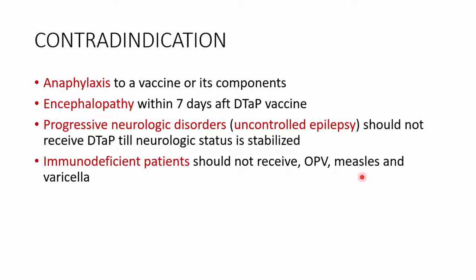Some contraindications preventing vaccination include anaphylaxis or hypersensitivity to the vaccine or its components. Encephalopathy occurring within seven days of diphtheria, tetanus, and acellular pertussis vaccine is a contraindication. In children with progressive neurological disorders such as uncontrolled epilepsy, avoid giving diphtheria, tetanus, and acellular pertussis until the neurological state has stabilized. Immunodeficient patients should not receive live attenuated vaccines such as OPV, measles, and varicella.